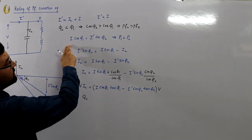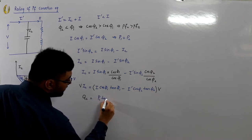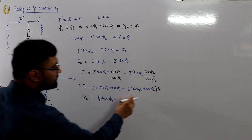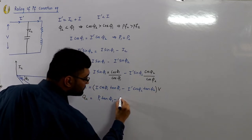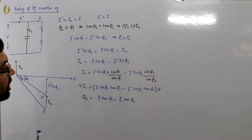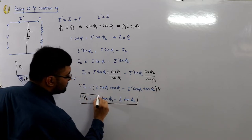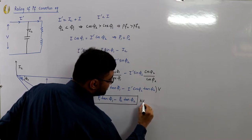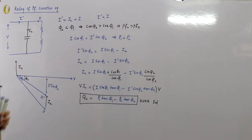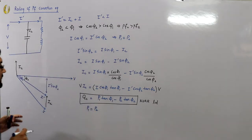So we get: QC = V·I·cosφ1 · tanφ1 minus V·I'·cosφ2 · tanφ2, which equals P1·tanφ1 minus P2·tanφ2. These are the KVARs required — the leading KVARs you inject into the system to achieve the desired power factor.